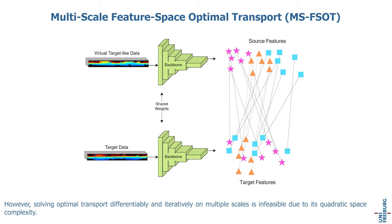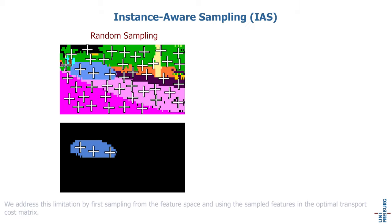However, solving optimal transport differentially and iteratively on multiple scales is infeasible due to its quadratic space complexity. We address this limitation by first sampling from the feature space and using the sampled features in the optimal transport cost matrix.